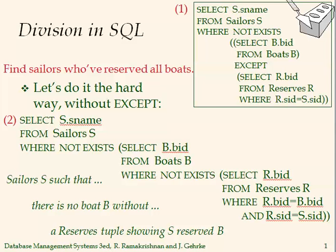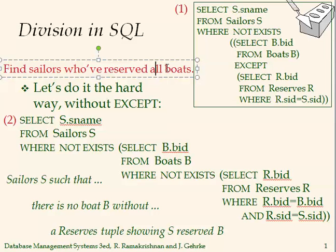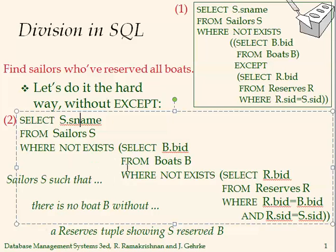In relational algebra we said that this type of query gets the keyword 'all'. In this case we want sailors who have reserved all boats. If we change that to 'some' then it becomes a simple join. But 'all' means the whole table — all the elements should be associated with sailors. In this case they want the name.